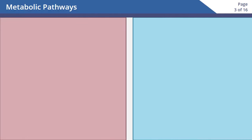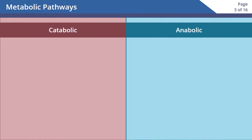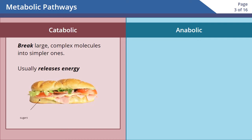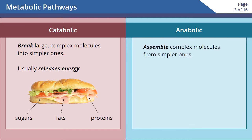There are two main types of metabolic pathways: catabolic and anabolic. Catabolic reactions break large, complex molecules into simpler ones. This process usually releases energy. Digesting the turkey sandwich into usable sugars, fats, and proteins is a catabolic reaction.